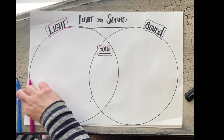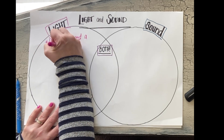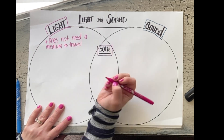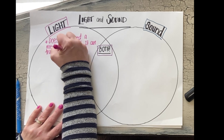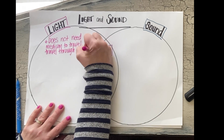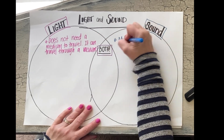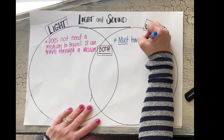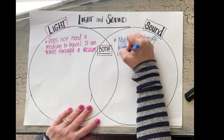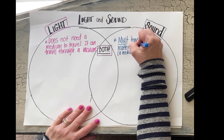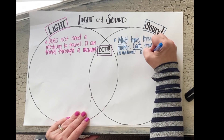That's actually one way that light and sound are different. Light does not need a medium to travel — it can travel through a vacuum. But sound requires a medium or matter to travel through, and it cannot travel through a vacuum.